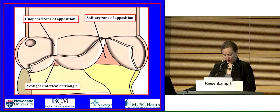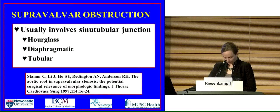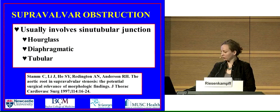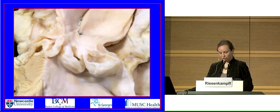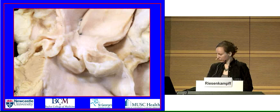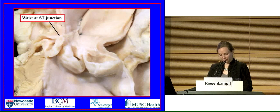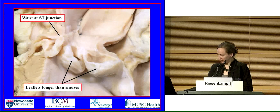We now move on to the last area of possible stenosis: the supravalvar region. Usually supravalvar obstruction involves the sinotubular junction, and it can be hourglass, diaphragmatic or tubular. This is shown by the cited article of Christoph Stamm, carried out when he worked together with Robert Anderson in his laboratory. This image shows a typical example of supravalvar stenosis — the major lesion is at the sinotubular junction, so the stenosis is really distal valve stenosis. There are narrowed entrances to the sinuses, which results in leaflets that are longer than the sinuses, and often the surgeon will need to enlarge all of the sinuses.